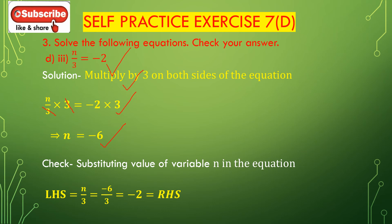The multiplication of minus and plus is minus. So n = -6. Now we check by substituting n = -6 in the equation. Left hand side: n/3 = -6/3 = -2, which is equal to the right hand side. So left hand side equals right hand side and the equation is satisfied with n = -6. The value for the variable n is -6.